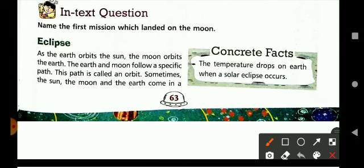Now let's read about eclipse. What are eclipses? As the earth orbits the sun, the moon orbits the earth. The earth and the moon follow a specific path, and this path is called an orbit.